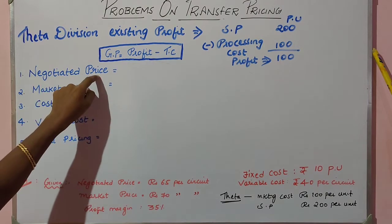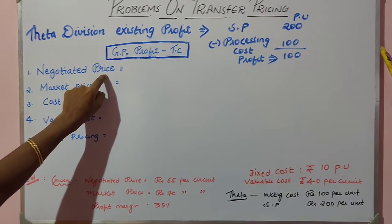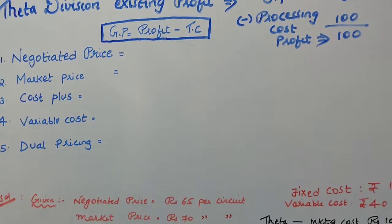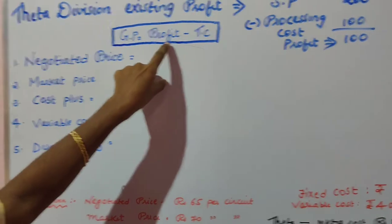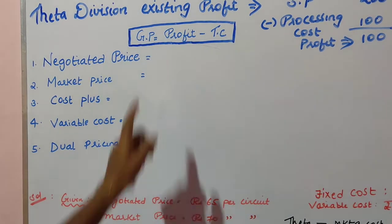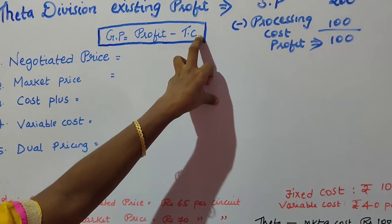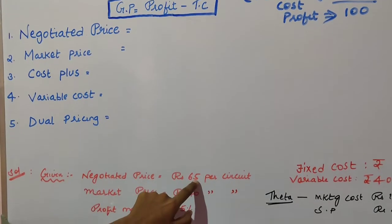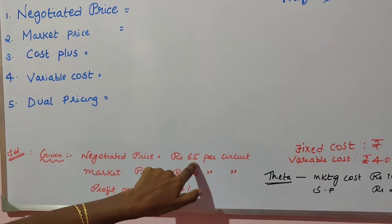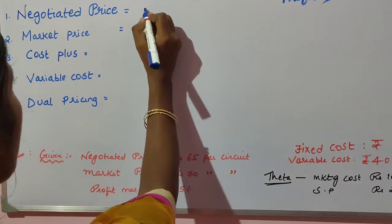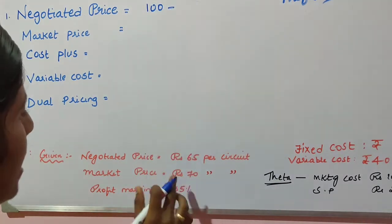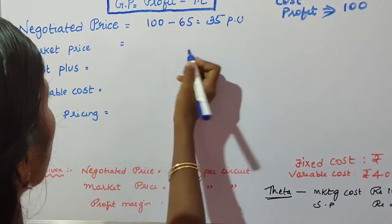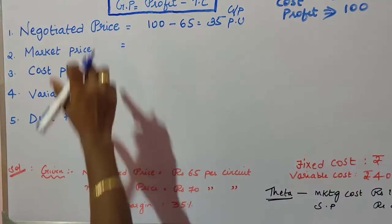Starting with negotiated price: the transfer price is determined by negotiation between buyer and seller. The negotiated price is already given in the question as Rs 65. This is treated as the transfer cost. So profit (100) minus transfer price (65) equals 35 per unit gross profit under negotiated pricing.